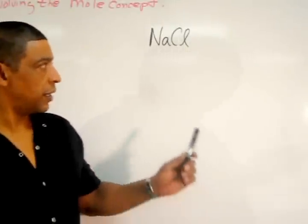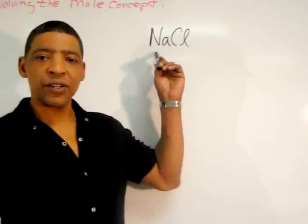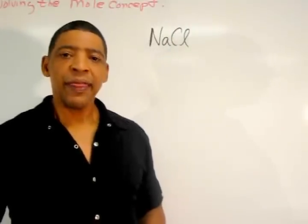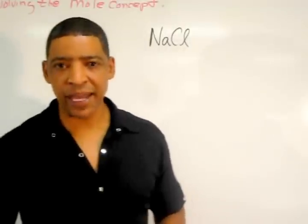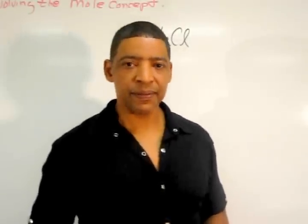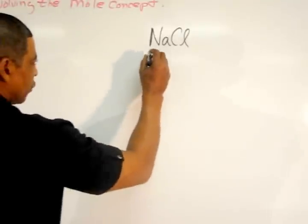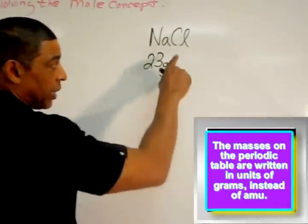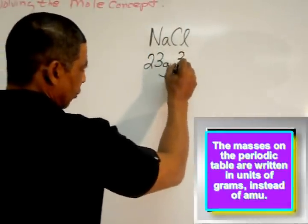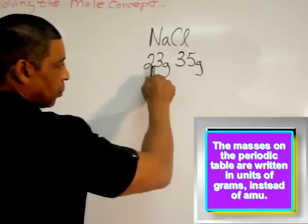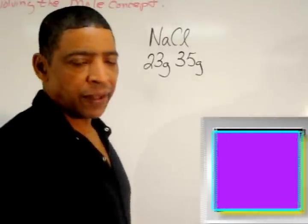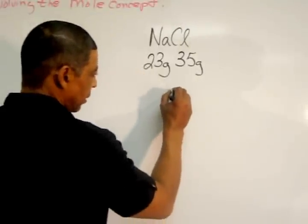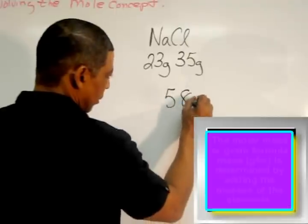This formula contains one sodium ion and one chloride ion. Now, go to the periodic table and determine the masses of each element. The rounded mass for sodium is 23 grams. The rounded mass for chloride or chlorine is 35 grams. 23 plus 35, so the molar mass or formula mass for this compound will be 58 grams per mole.